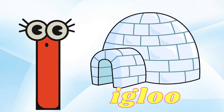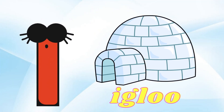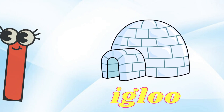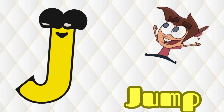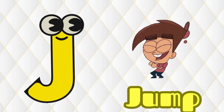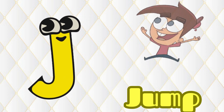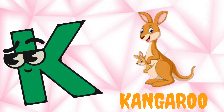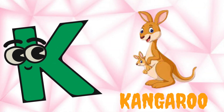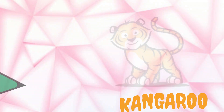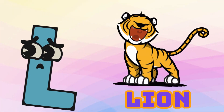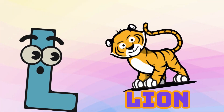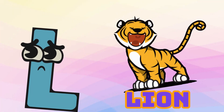I is for Igloo, I-I-Igloo. J is for Jump, J-J-Jump. K is for Kangaroo, K-K-Kangaroo. L is for Lion, L-L-Lion.